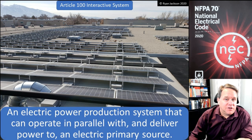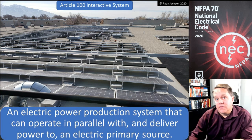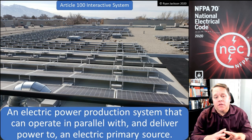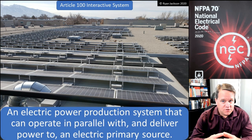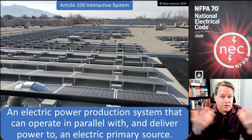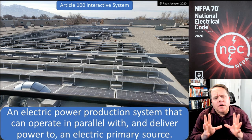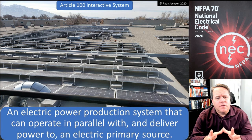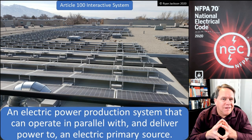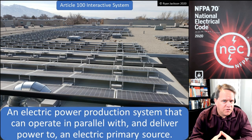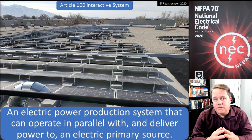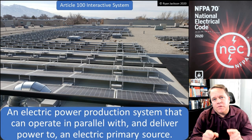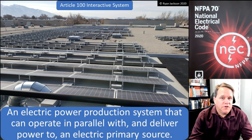We're going to cover two definitions in this video. The first one is interactive system. This is an electric power production system — something that can generate electrical energy — that can operate in parallel with and deliver power to an electric primary source. Here we've got a solar PV system, and this is something that is operating in parallel with the utility.